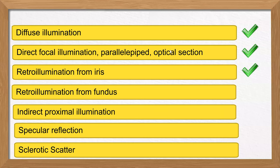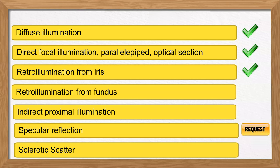Retro-illumination from the fundus and indirect proximal illumination are not frequently used for the cornea. Specular reflection is used for examining the corneal endothelium, and sclerotic scatter is used to check for subtle corneal opacities — however, these are not done routinely. In the exam, if the examiner tells you to examine the corneal endothelium, you perform specular reflection. If told to do sclerotic scatter, you do it — but not without request.